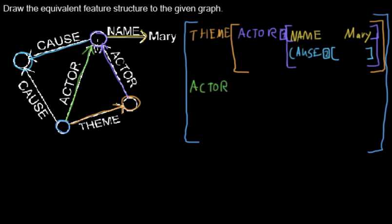And ACTOR points to this node which I already drew here and where I used a pointer. And so I can just save a lot of time and just write down the pointer here.